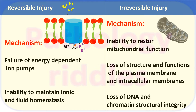There will also be loss of structure and function of plasma membrane and intracellular membranes. The plasma membrane protects the cell from the outside environment, while intracellular membranes surround the organelles. If these are disrupted, then the cell is irreversibly injured.